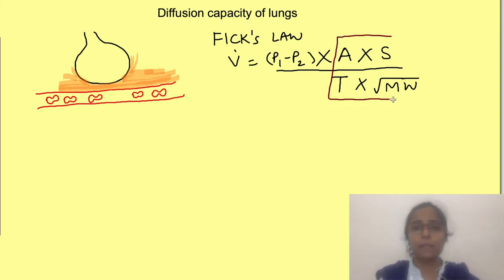If we combine the properties of lung membrane and the properties of gases together we call it diffusing capacity of lungs for that gas. Diffusing capacity of lungs because it includes properties of respiratory membrane and for a particular gas because it includes properties of that gas that is solubility and molecular weight. By combining both these properties we can rewrite Fick's law as rate of diffusion is equal to DL that is diffusing capacity for lung times the partial pressure gradient P1-P2.